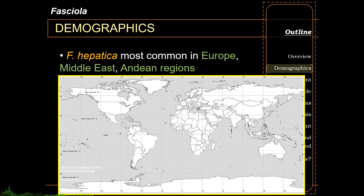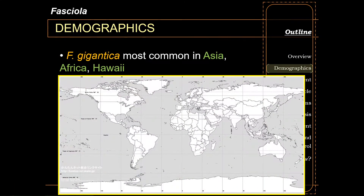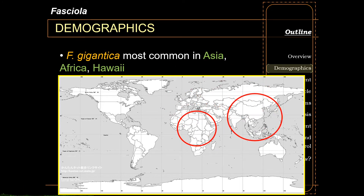Fasciola hepatica is most commonly seen in parts of Europe, the Middle East, and in the Andean region. Due to its geographic distribution, Fasciola hepatica is also called the temperate liver fluke. Fasciola gigantica, on the other hand, is more commonly seen in African and Asian regions — specifically China, Vietnam, Korea, India, and Thailand.